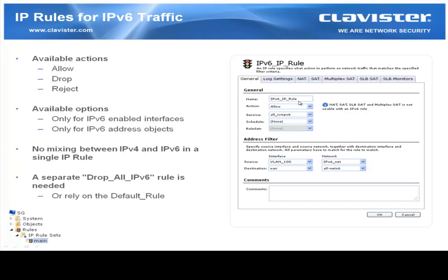Here is an example of how to enter an IPv6 rule. We give it a name — IPv6 IP Rule. We specify an action; I select Allow. There is also an information box telling us which actions are not available, and if we choose one of them when we do save and activate the configuration, we will be presented with an error. We can select a service — I chose all ICMPv6. We can attach a schedule, and then we determine the source interface, source network, destination interface, and destination network. Here we can see a specific All Nets 6, which means all available IPv6 addresses.